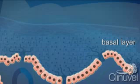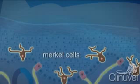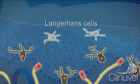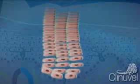Within the basal layer are melanocytes, cells responsible for producing melanin, the pigment that gives skin its tone and photo protection. Also present are Merkel cells, most commonly associated with nerve endings, and Langerhans cells, which play a role in the immune system, also found in the epidermis.